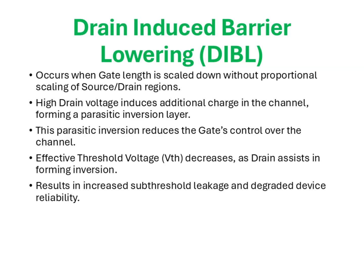As a result, the effective threshold voltage is reduced since less gate voltage is required to invert the channel — the drain is already contributing to the inversion process. This lowering of the threshold voltage shifts the IV characteristics of the MOSFET and introduces significant sub-threshold leakage currents even when the device is supposed to be in the off state. In advanced nodes, DIBL becomes a major concern causing drain leakage, increased standby power dissipation, and severe performance limitations. To mitigate DIBL, techniques such as lightly doped drain extensions, optimized halo implants, and advanced device architectures like FinFETs and gate-all-around FETs are employed, ensuring that the drain field influence is minimized.